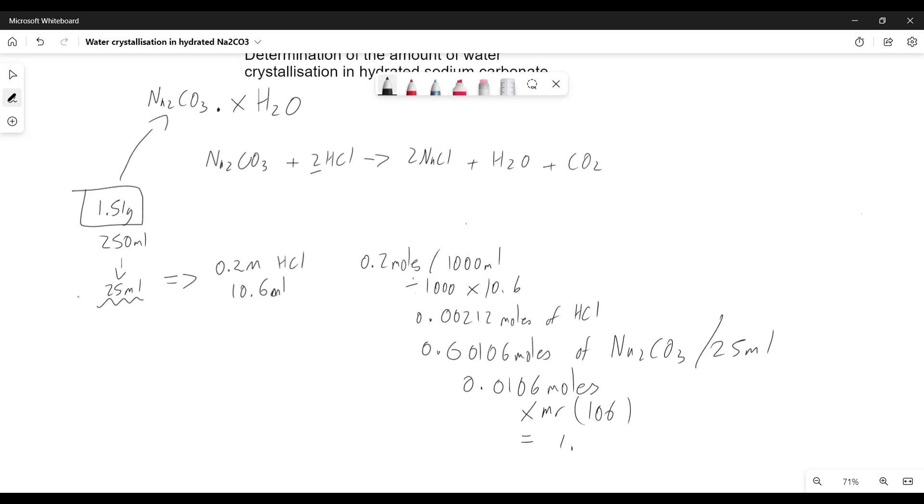If we do this multiplication here, we will get 1.1236 grams of our sodium carbonate per 250 mils.